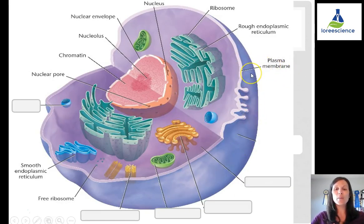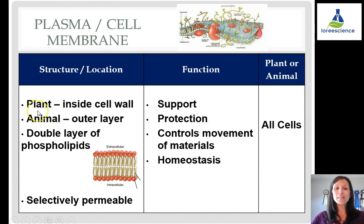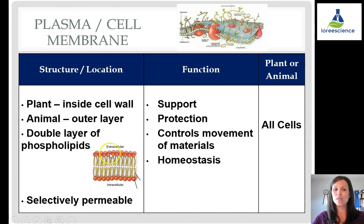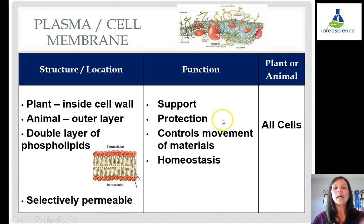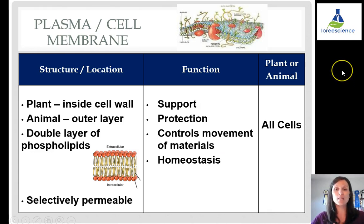The plasma membrane, sometimes called the phospholipid bilayer or cell membrane, is not rigid — plasma implies it is moving. In a plant, it is inside the cell wall; in an animal, it is the outermost layer. It is a double layer of phospholipids and is selectively permeable, meaning some things can get through and some cannot. Its job is to protect the cell, control movement of materials in and out, and help the cell maintain homeostasis. All cells have a cell membrane.